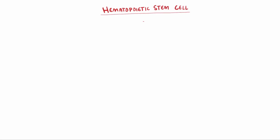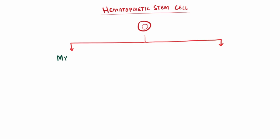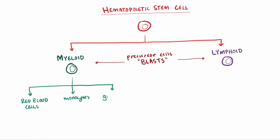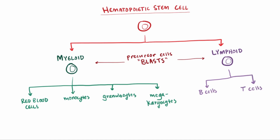Let's say that you've got a hematopoietic stem cell, and this cell is basically starting its choose-your-own-adventure game. It can choose to differentiate into a myeloid stem cell or a lymphoid stem cell — sometimes we just call these precursor cells blasts. If it goes the myeloid path, it can go on to be all sorts of specialized cells, like red blood cells, monocytes, granulocytes, or megakaryocytes. Alternatively, it could choose the lymphoid stem cell route and go on to become B cells or T cells of the immune system.